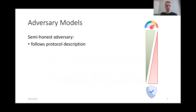When analyzing the security of a protocol, we need to specify an adversary model. There are different classes of adversaries. On the one side, there are semi-honest adversaries. These adversaries follow the protocol description as described, and try to learn additional information from the interaction with other parties. On the other side, there are malicious adversaries, who may behave arbitrarily and deviate from the protocol description. While security against malicious adversaries provides a much higher level of security, semi-honestly secure protocols are still way more efficient.